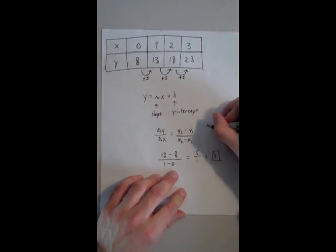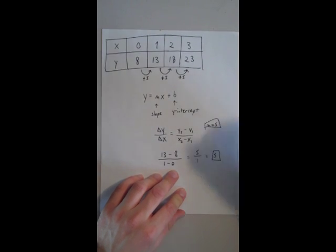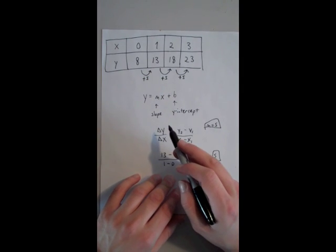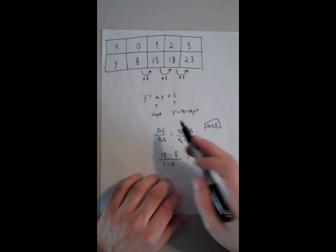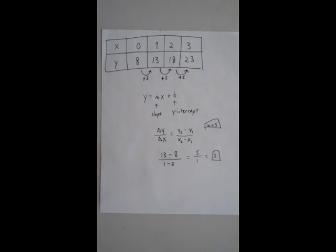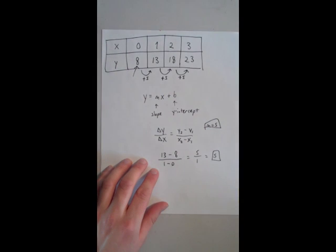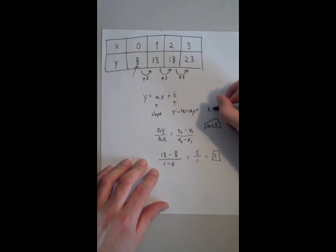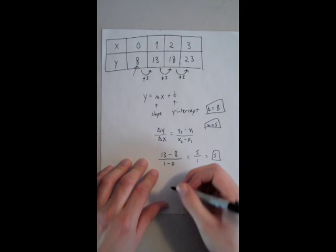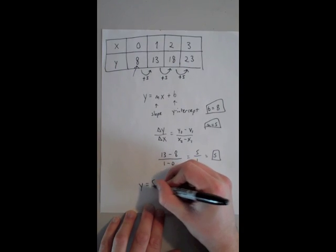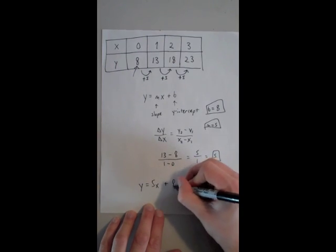So m, our slope, is 5. And the other thing we need to look for is the y-intercept. The y-intercept is just the y-coordinate of the point when x equals 0. That's the point on the y-axis where the equation crosses the y-axis. So in this case, they kind of gave it to us, the y-intercept is 8. So b is equal to 8. That means that our equation is y equals 5x plus 8.